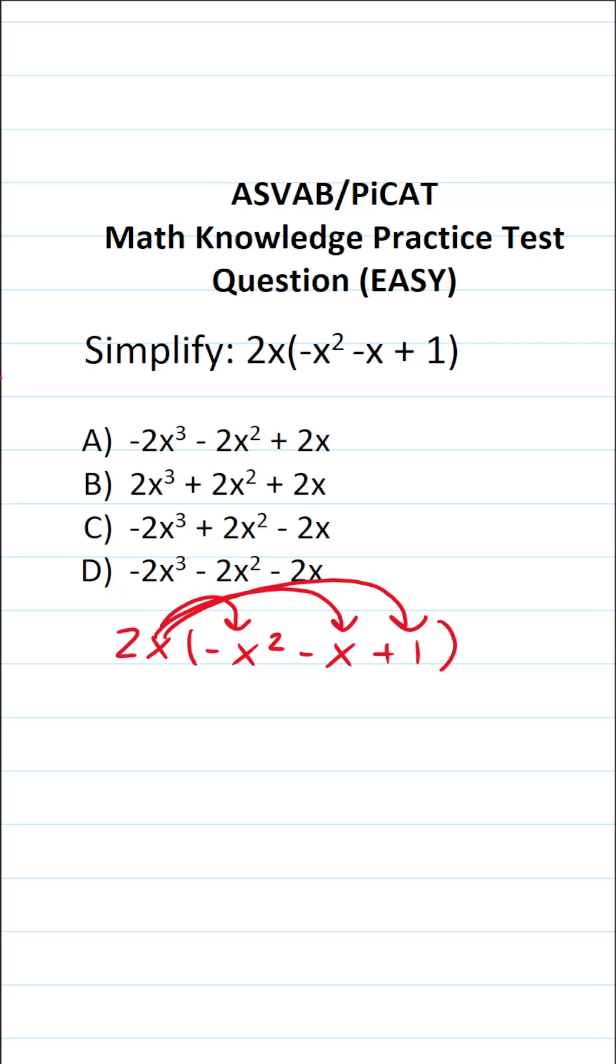We have 2x times negative x squared. That's going to be negative 2x to the third. Then we have 2x times negative x. That's going to be negative 2x squared.